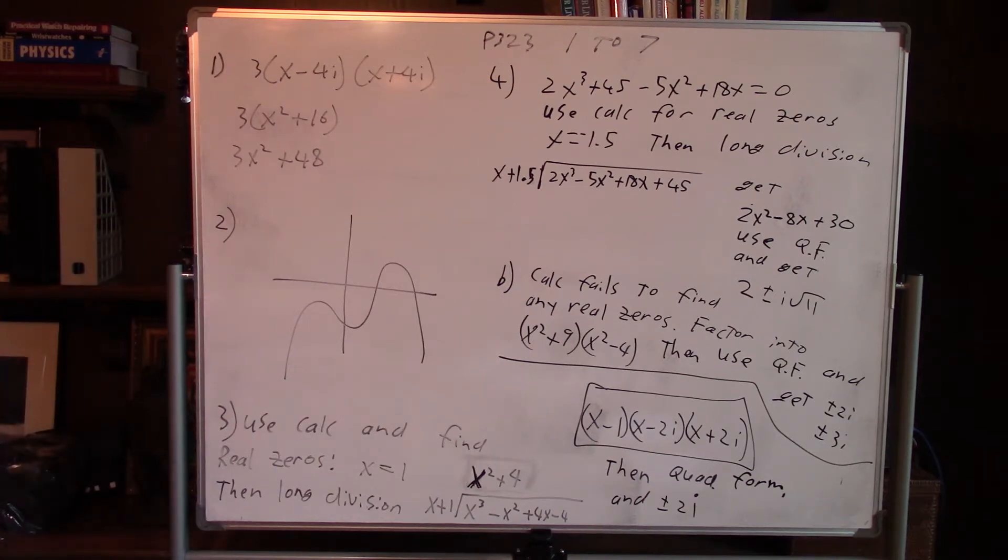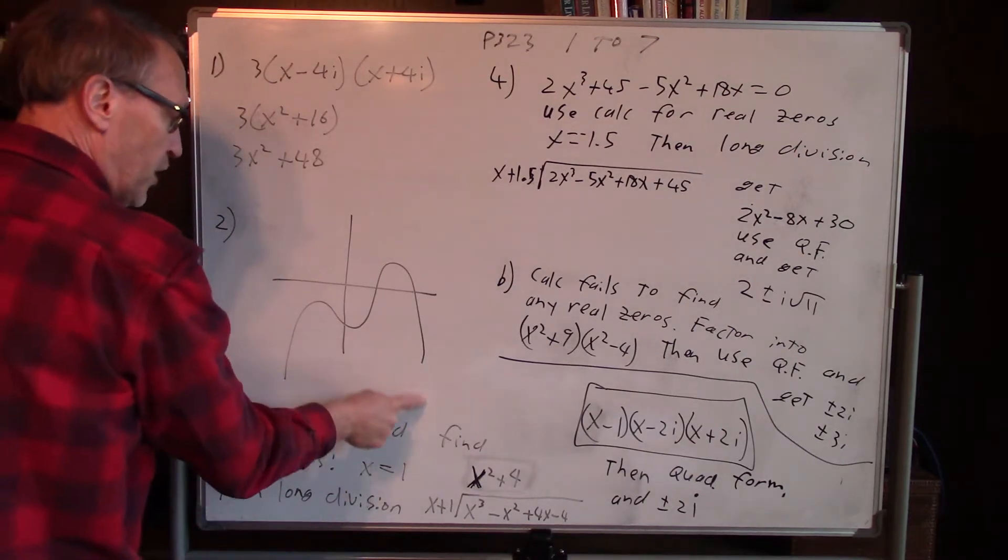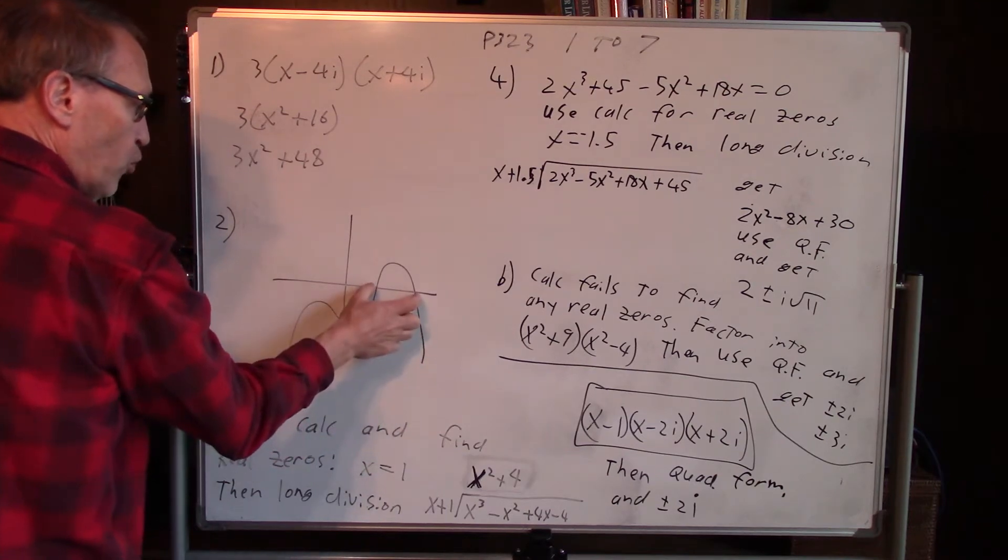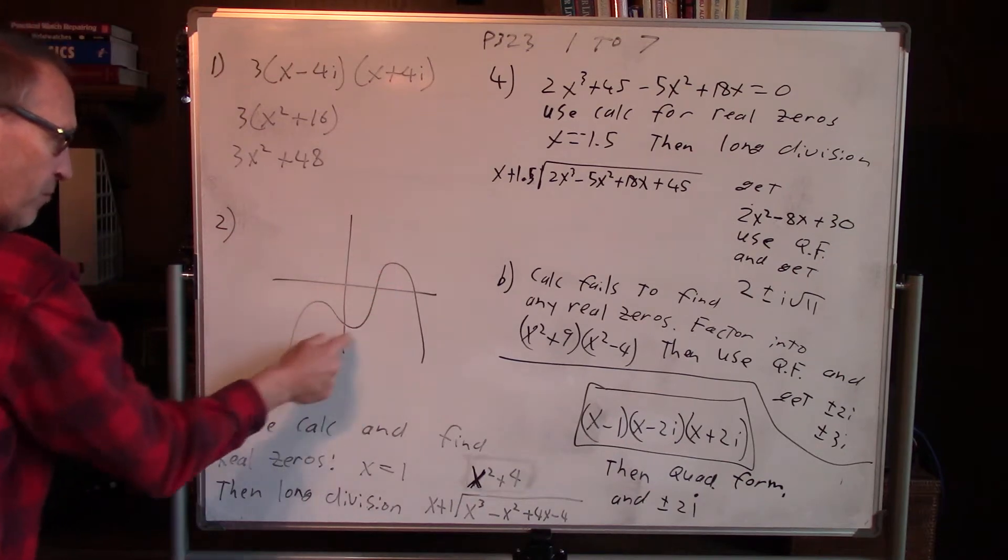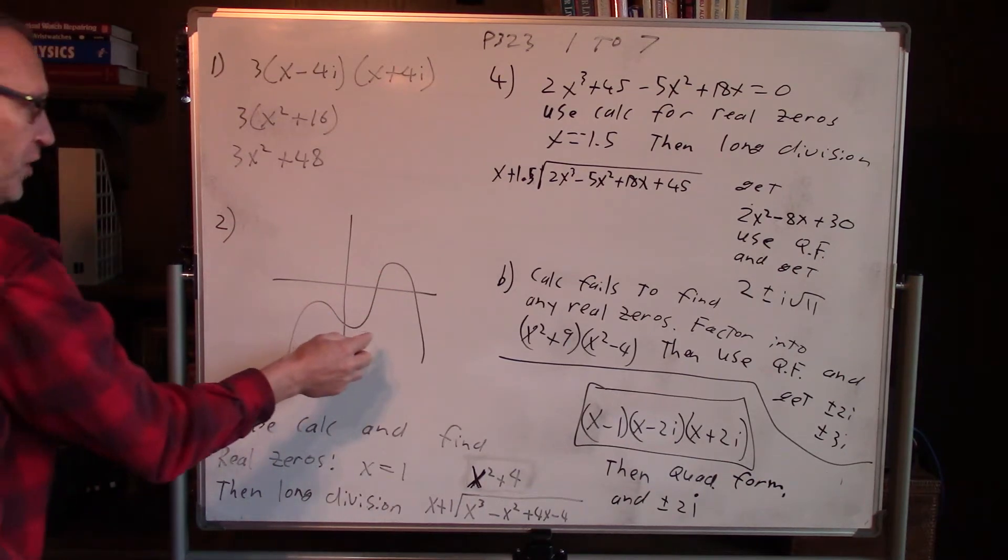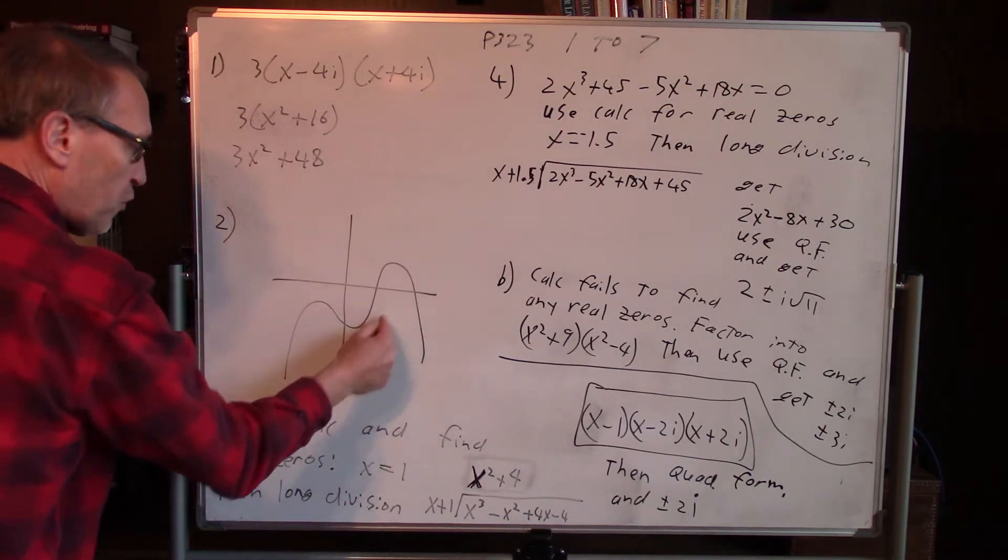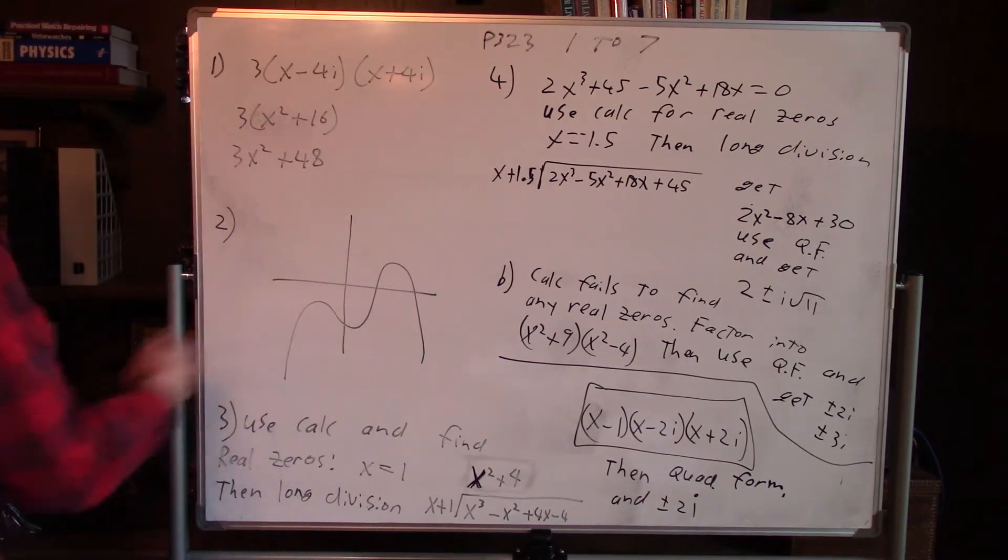Number 2 says to sketch the graph with a negative leading coefficient, two real zeros and two imaginary. Here's negative leading coefficient going down. Two real zeros and the other two cannot cross the x-axis again, so that's to come back down. You could have done another one where this one was below, then it went back up and over. Many answers for number 2.